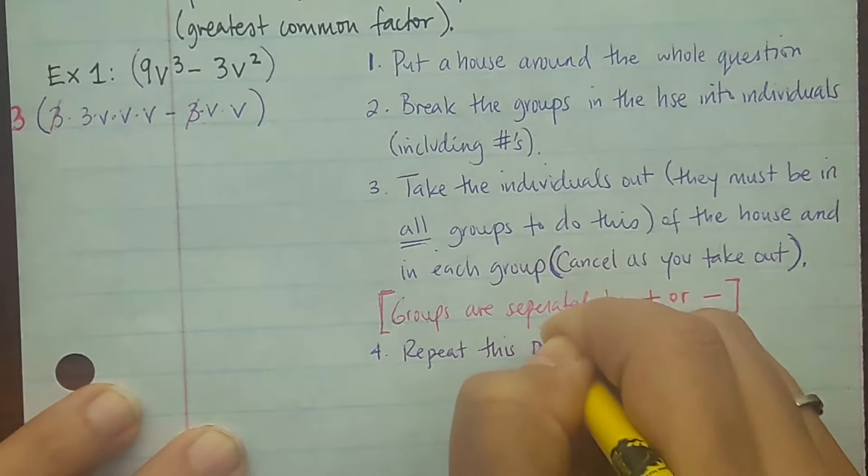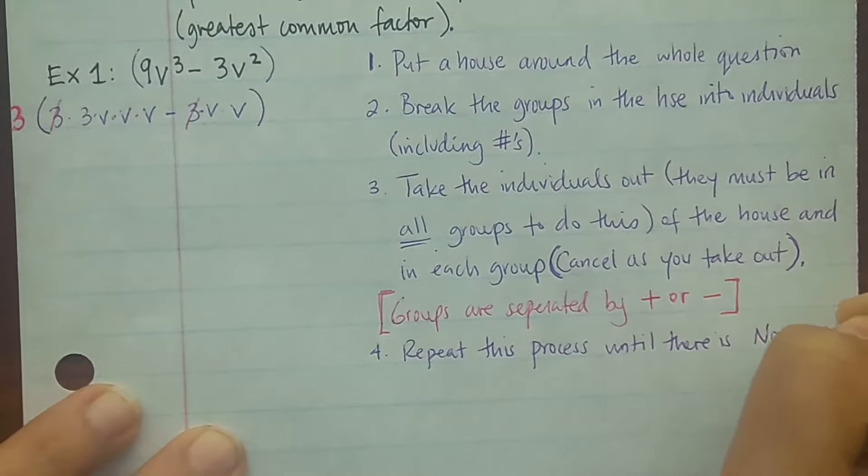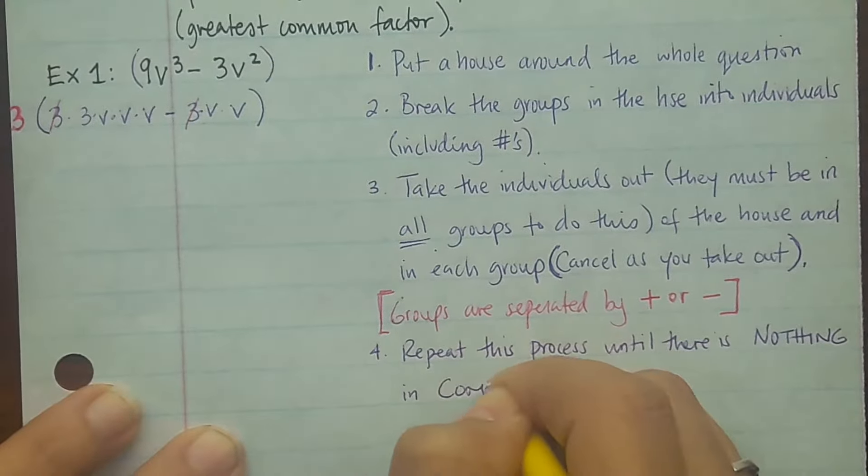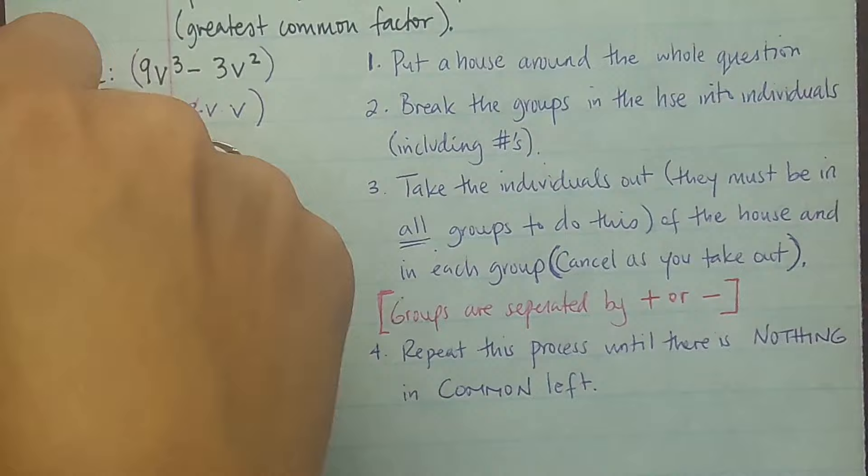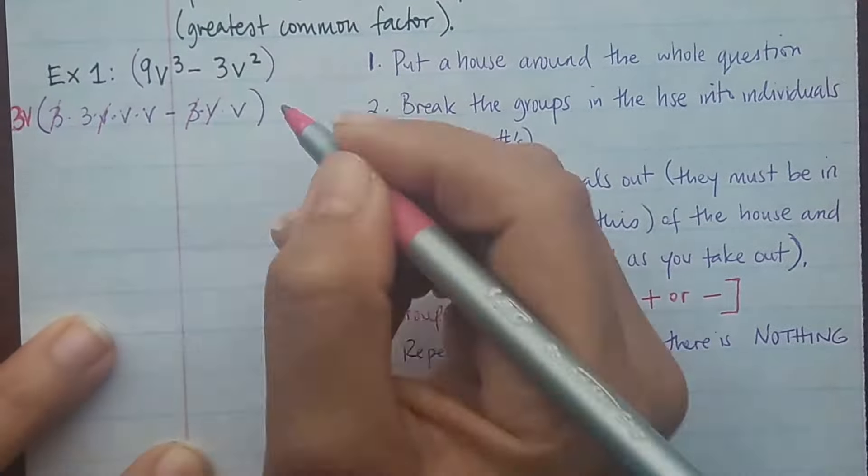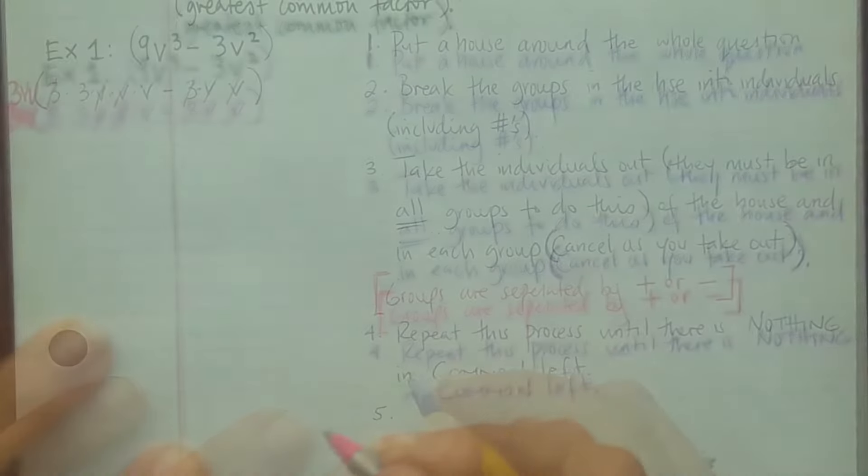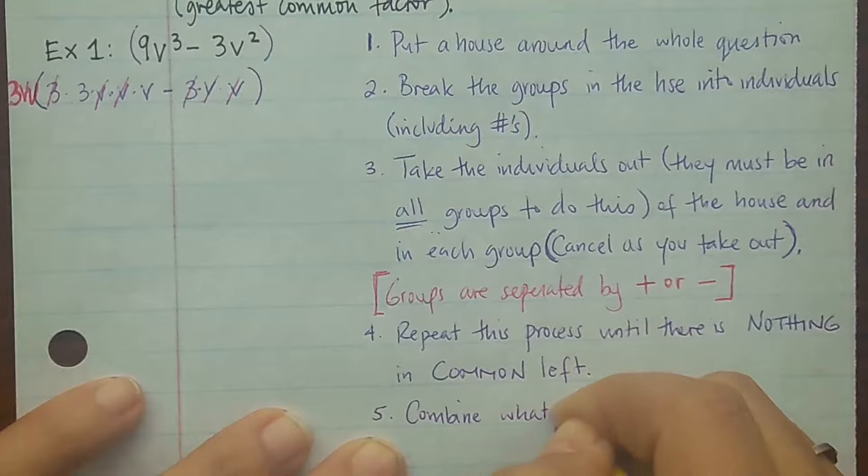Alright, number 4. Repeat this process until there's nothing in common left. There can't be anything in common in the parentheses left, otherwise you haven't taken out the greatest common factor. So what else can I take out? I can take out a v and I cross it out from both. I can take out another v and cross it out from both. So every time I take it out I just put it outside and I cross it out.